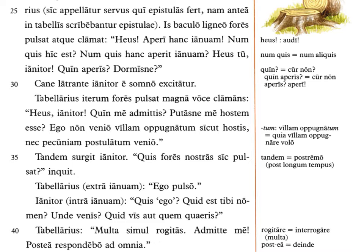'Heus ianitor, quin me admittis? Putasne me hostem esse?' — Why aren't you admitting me? Do you think that I'm an enemy? Note that hostis means an enemy in warfare. 'Ego non venio vilam oppugnatum sicut hostis' — I am not coming to attack the villa like an enemy. Oppugnatum here is the supine meaning to attack. 'Nec pecuniam postulatum venio' — nor am I coming to demand money. Postulatum is again an accusative supine.